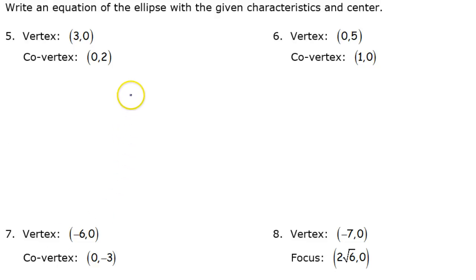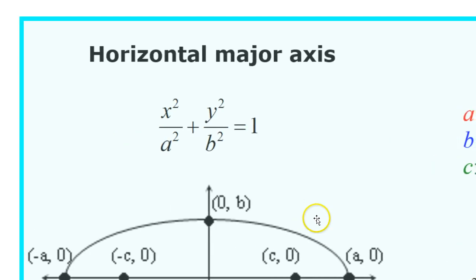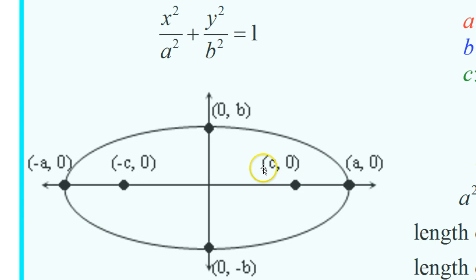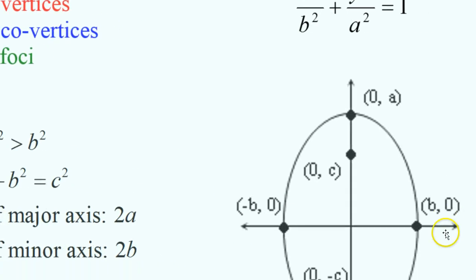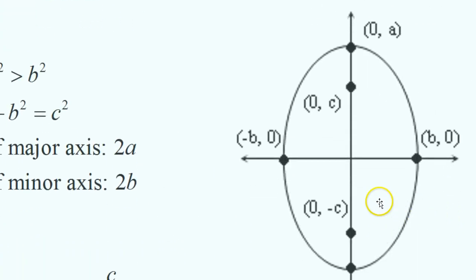In this video, we are given the vertex and a co-vertex of an ellipse, and I'm going to show you how to write an equation for that ellipse. An ellipse has two vertices, which are always the long way. Then we have co-vertices, which are the short way — the sides of the ellipse. Sometimes ellipses are stretched horizontally, sometimes vertically. But no matter what, the vertex is always the long way, and the co-vertex will always be the short way.